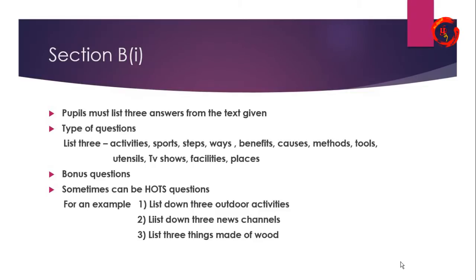Let me explain some of these types. List three activities — from the text, you may list any activities given. Sports, for example: basketball, netball, volleyball. Steps — for example, when making orange juice: peel the skin of the orange, then slice the orange. Ways — for example, during the MCO Covid period, the ways to stay safe are: stay at home, wash your hands frequently, do not touch each other, keep distance, and wear a mask. Benefits are the good things that result from doing something — for example, eating vegetables gives you vitamins and keeps you healthy.